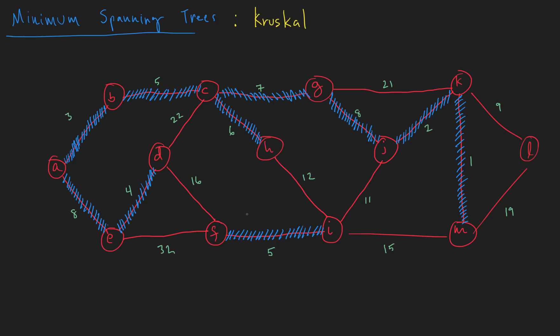Nine would be the next one. Is there a nine? Yes, there's a nine. So let's add that one to the tree. A ten, no. Eleven is the next one. Here we go. We can add that. No cycles yet, so we're good.